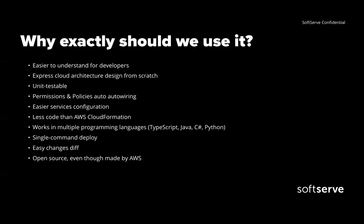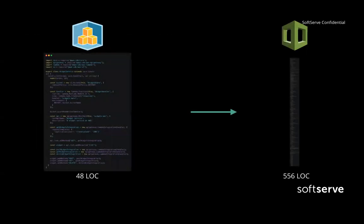CDK has single-command deploy — type CDK deploy in your console and after a confirmation, changes are deployed to the cloud and ready for production. It has an easy diff mechanism showing what will be changed, what permissions will be added or removed, without needing to deploy first. Even though it's made by AWS, it's open source — so if something isn't working, you can fix it yourself or create a ticket.